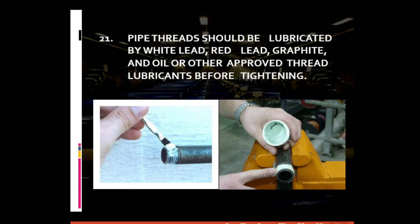For general piping requirement number twenty-one: pipe threads should be lubricated by white lead, red lead, graphite and oil, or other approved thread lubricants before tightening. To prevent possible thread damage and allow easier connection or disassembly of screwed pipes or joints, it is important to use thread lubricants before tightening, ensuring that the threads of the pipes are not damaged.